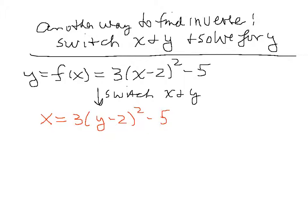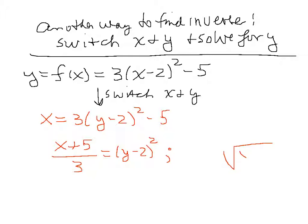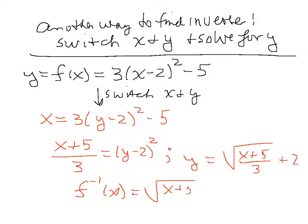Now solve for y. First, add 5 to both sides. Then divide both sides by 3. Next, take the square root of both sides, giving the square root of the quantity x plus 5 over 3, equals y minus 2. Finally, add 2 to both sides to get y. That is another way to find the inverse of f, and it is exactly the same result as before.